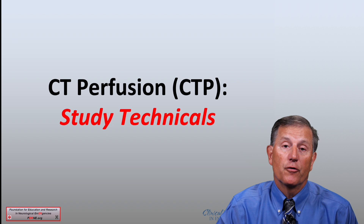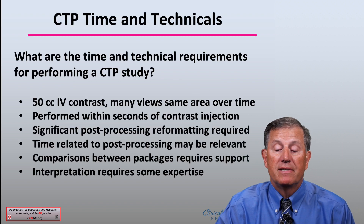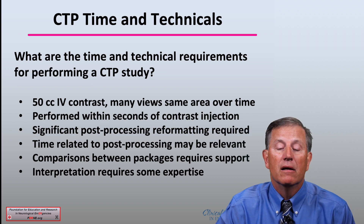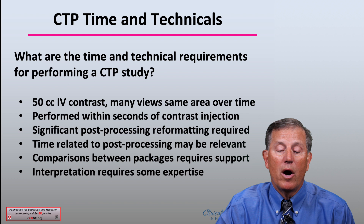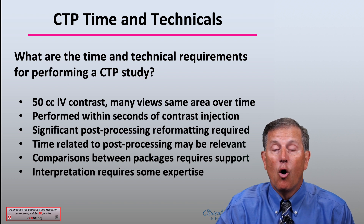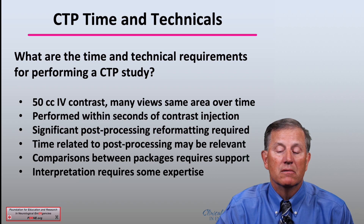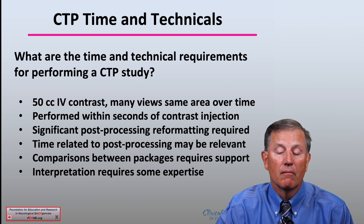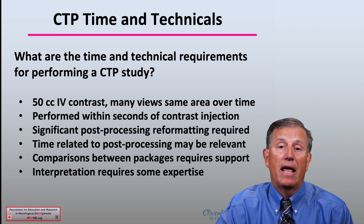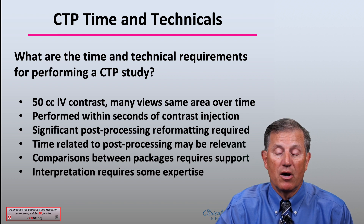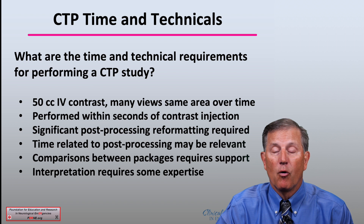Regarding the study technicals for CT perfusion: CTP does require 50 cc's of IV contrast, in addition to the CTA. It requires many views to be obtained in the same area over time, providing the fourth dimension of the CTP. It is performed within seconds of contrast injection. It requires significant post-processing reformatting. The time related to this post-processing may be relevant — it might be long enough that there would be a delay in a CTP even if the CTA results are present. It does require some comparisons between packages that do this testing for the radiologist and the tech.